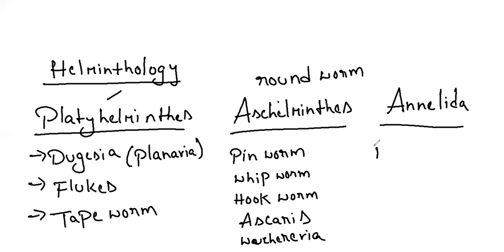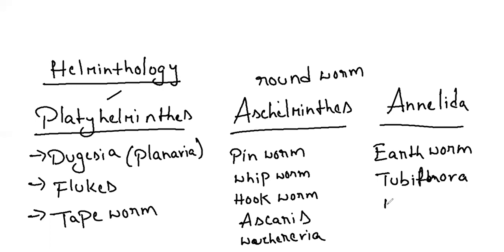Annelida, which includes earthworm, and tubifex. Nereis. Leeches — Hirudinea. So these things come under worms: flatworms, roundworms, and you will also have the ring-bearing worms, which is annelida.